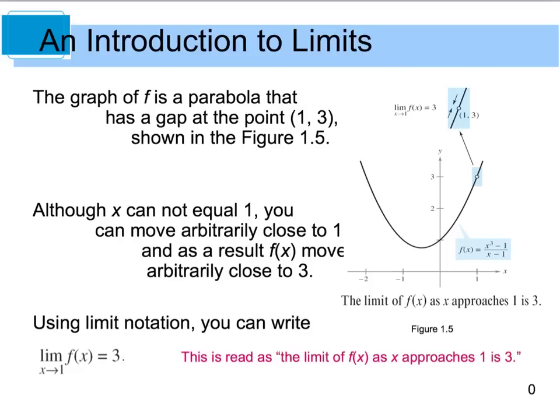When we look graphically, we see that our graph is a parabola. But I do have this undefined point at x equals 1, and we show that with an open circle. Graphically, as I come in from the left, my f(x) or y value is approaching 3. As I come in from the right on my x values, the y values are also approaching the same value of 3. We can use that limit notation that says the limit of f(x) as x approaches 1 equals 3.